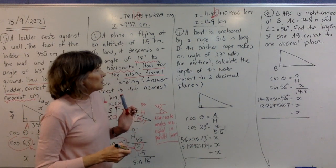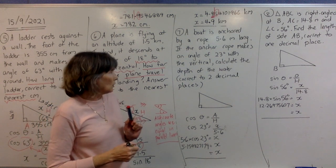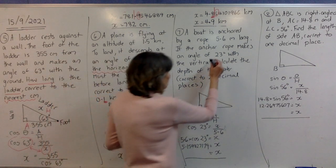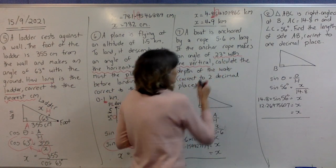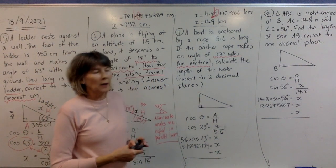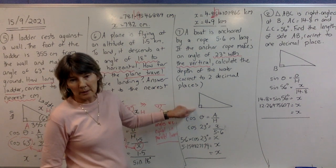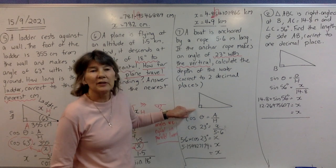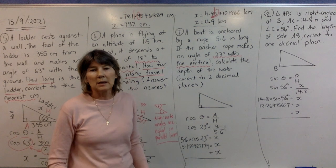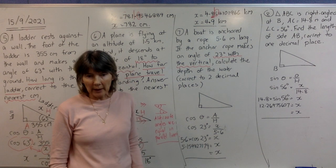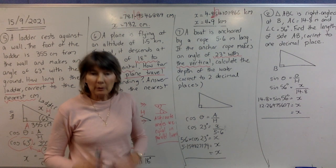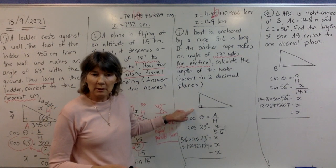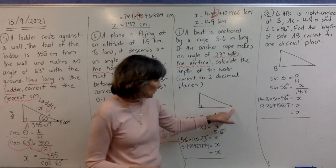Next question: a boat is anchored by a rope 5.6 meters long, and the anchor rope makes an angle of 23 degrees with the vertical. The biggest mistake people make is thinking the rope hangs straight down — that's not correct. The boat drifts with the tide, so it's not sitting directly above its anchor.